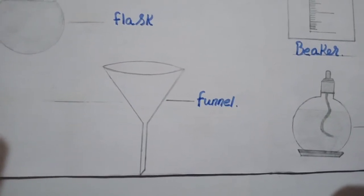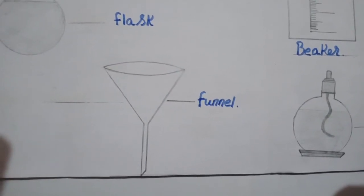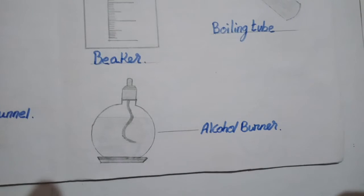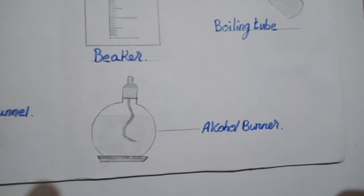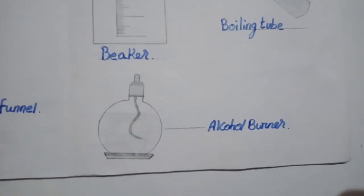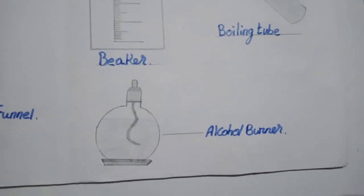Next one is a funnel. The funnel is used to put some chemicals into the test tube and to filtrate. Next, this is a burner — this is an alcohol burner.